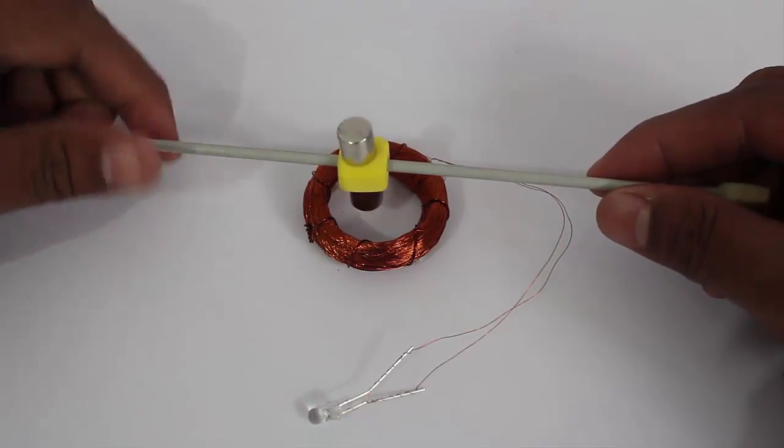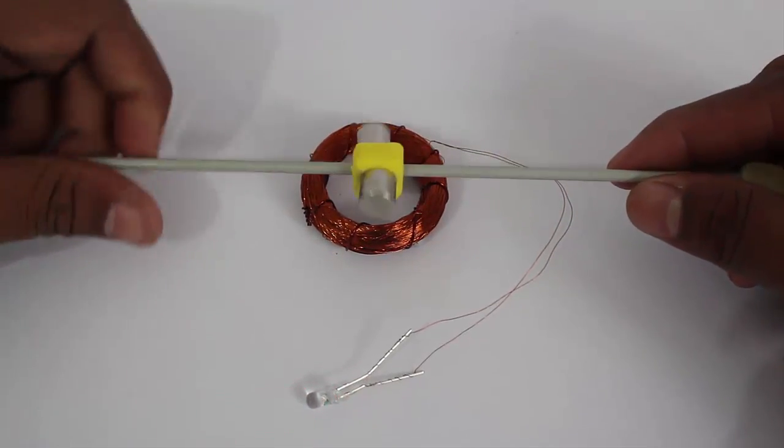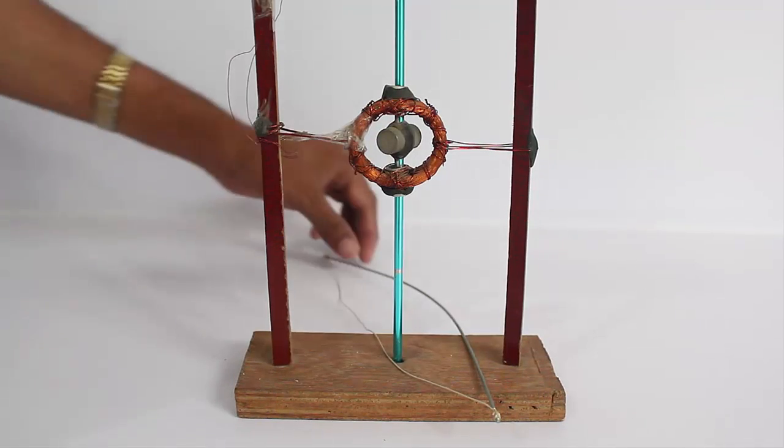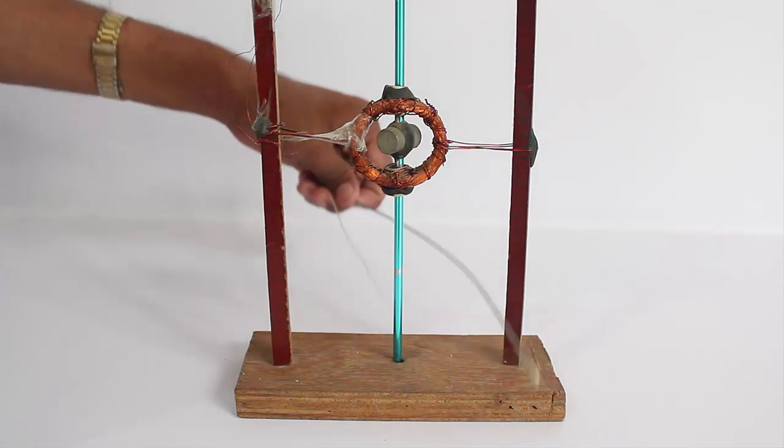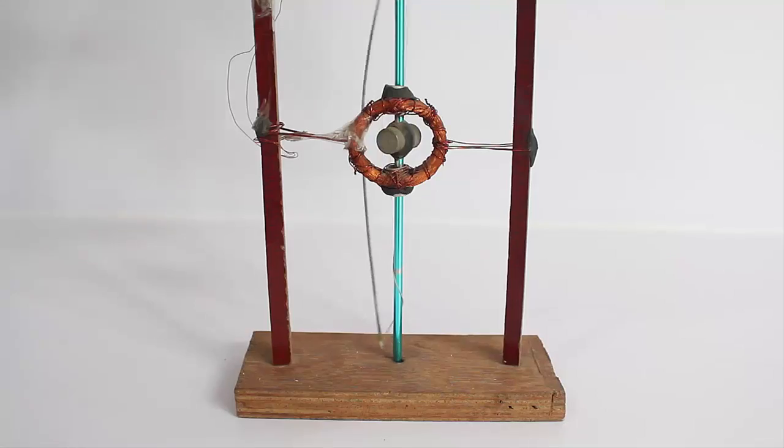Now as you spin these strong neodymium magnets inside the coil there is a spinning magnetic field which lights up the LED.